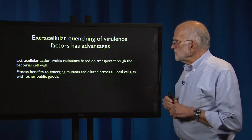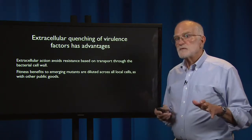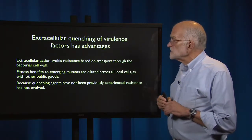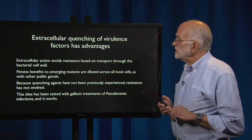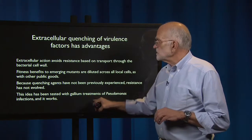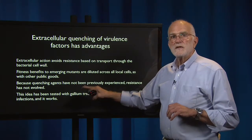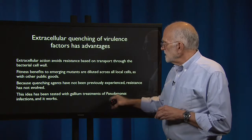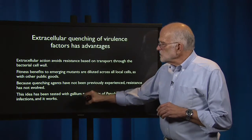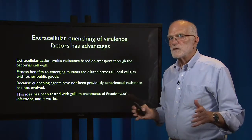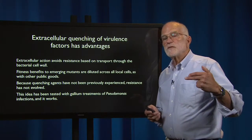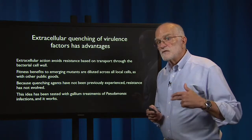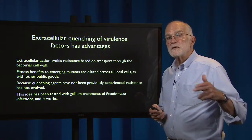Any fitness benefit to an emerging mutant will be diluted across all local cells, as with any other public good. Because a quenching agent may not have previously been experienced, resistance has not evolved to that particular quenching agent. This idea has been tested with gallium treatments of Pseudomonas infections, and it works. Gallium quenches iron uptake in siderophores — by flooding the infection with gallium, Pseudomonas loses the benefit of producing siderophores; they aren't doing any good anymore. This drives invasion by variants that aren't producing siderophores, since production is costly. Once that happens, the public good is knocked out.